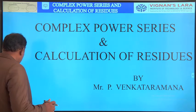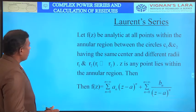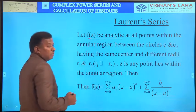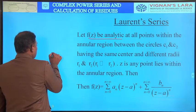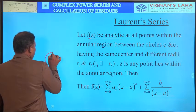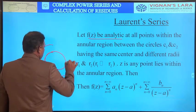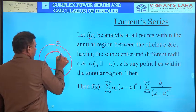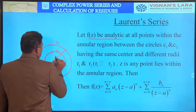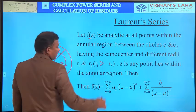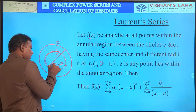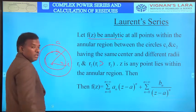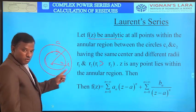Coming to the Laurent series: f(z) is an analytic function at all points within the annular region between the two circles. The first circle has radius r1 and the second circle has radius r2. Clearly r1 is greater than r2, and both circles are at the same centre. Here z is any point within the annular region, meaning the space between the two concentric circles.